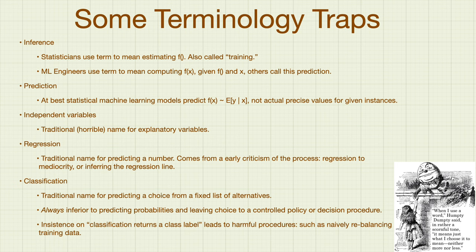Independent variables is the historic name for explanatory variables. Regression is the traditional name for predicting a number — it comes from regression to mediocrity. And classification is just the prediction of a value from a small number of categories: is this the letter A, B, or C? It almost never should be done — it's much, much better to predict the probability of being the letter A instead of making a hard determination.